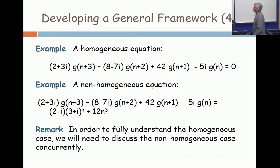Here's a totally artificial example, but it works well. On the top, I give a homogeneous equation of this type. I'm using the function g, and the coefficients come from the complex number system. Two plus three i times g of n plus 3, minus eight minus seven i times g of n plus 2, et cetera. And I threw in my favorite 42.